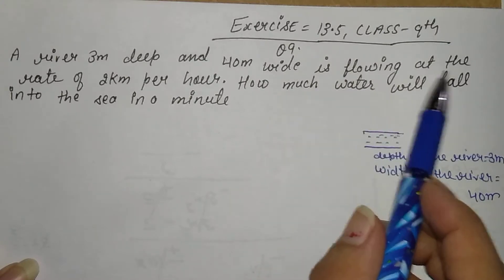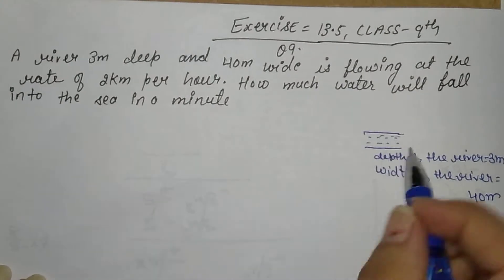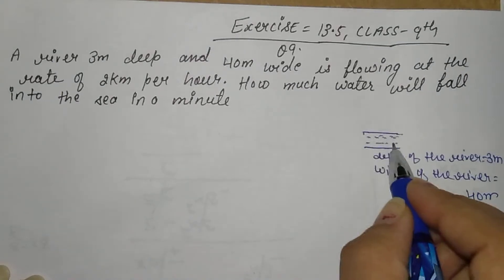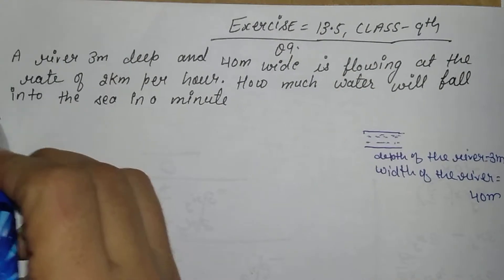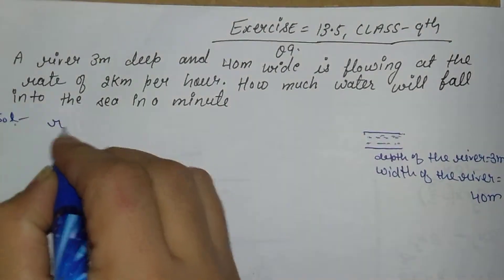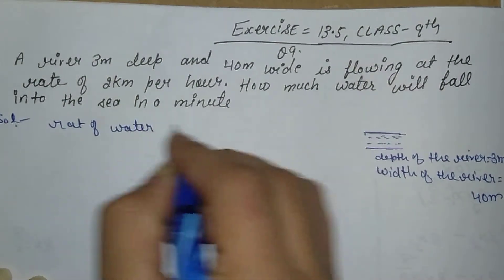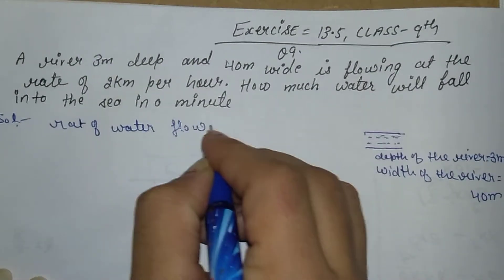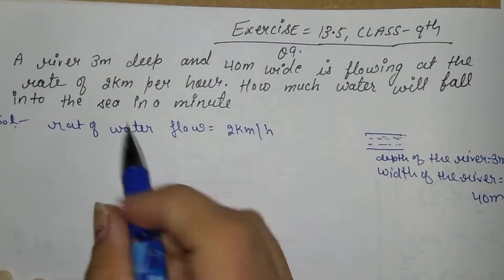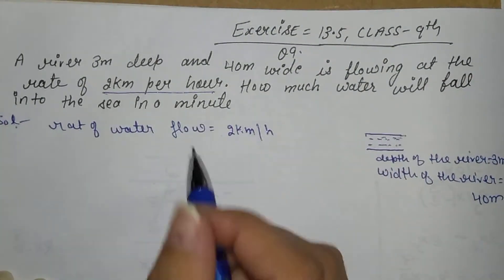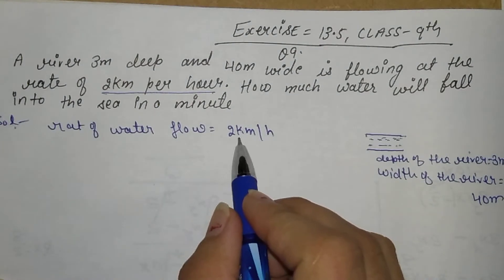The river is flowing at the rate of 2 kilometers per hour. This is the rate of water flow.